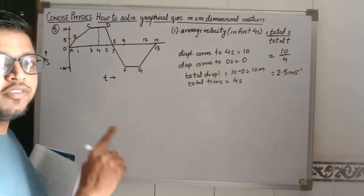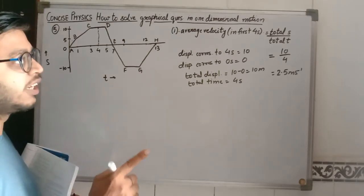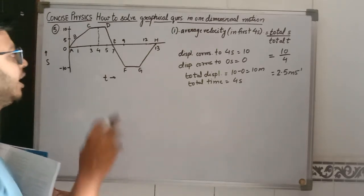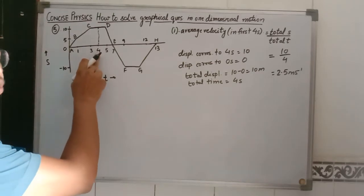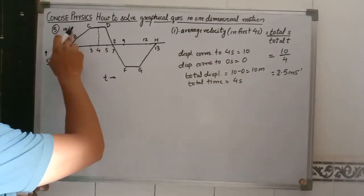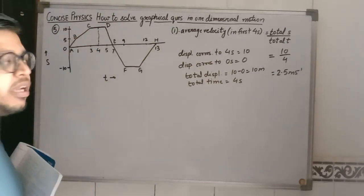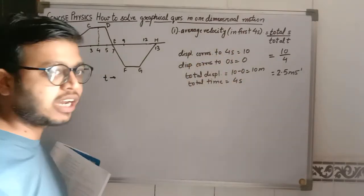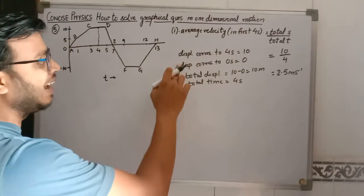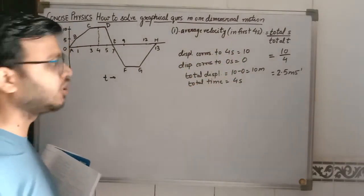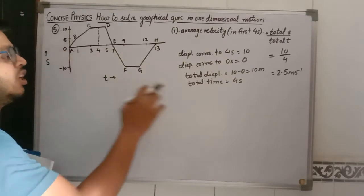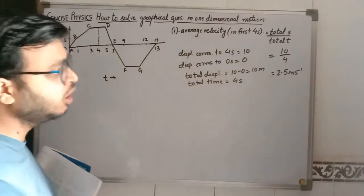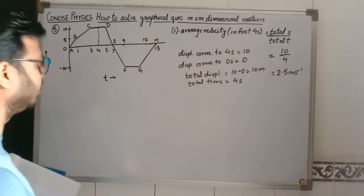To summarize part one: the formula is total displacement over total time. The displacement at 4 seconds is 10 meters and at 0 seconds is 0, giving total displacement of 10 and total time of 4. We apply the values and get 2.5 meters per second.